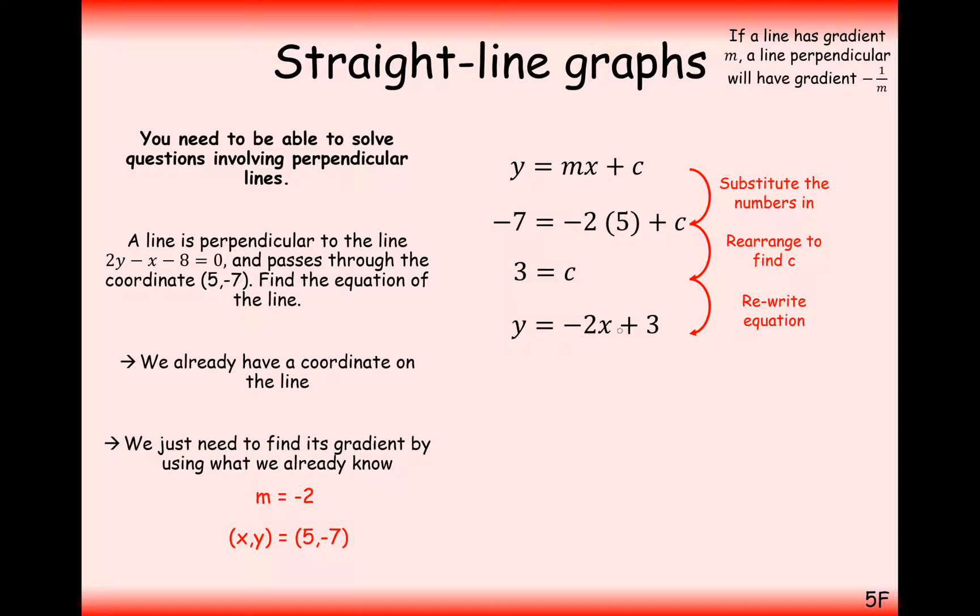Rewrite out our equation again to y equals minus 2x plus 3. So this line here is going to be perpendicular to this line here, and it's going to pass through 5, minus 7. It won't necessarily intersect the other line at 5, minus 7.